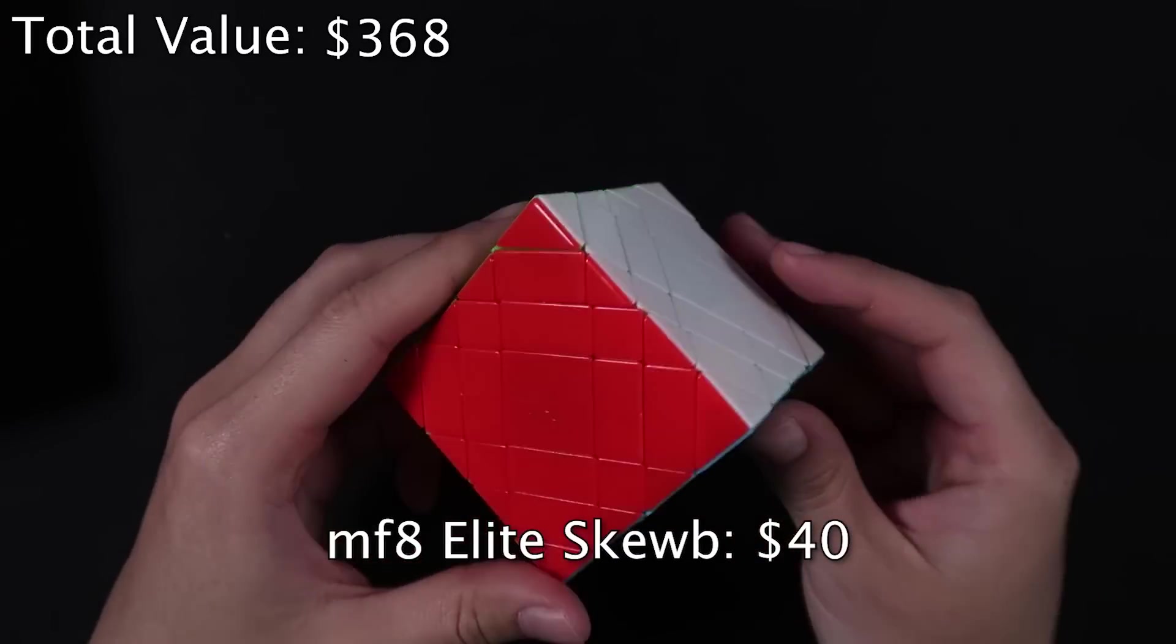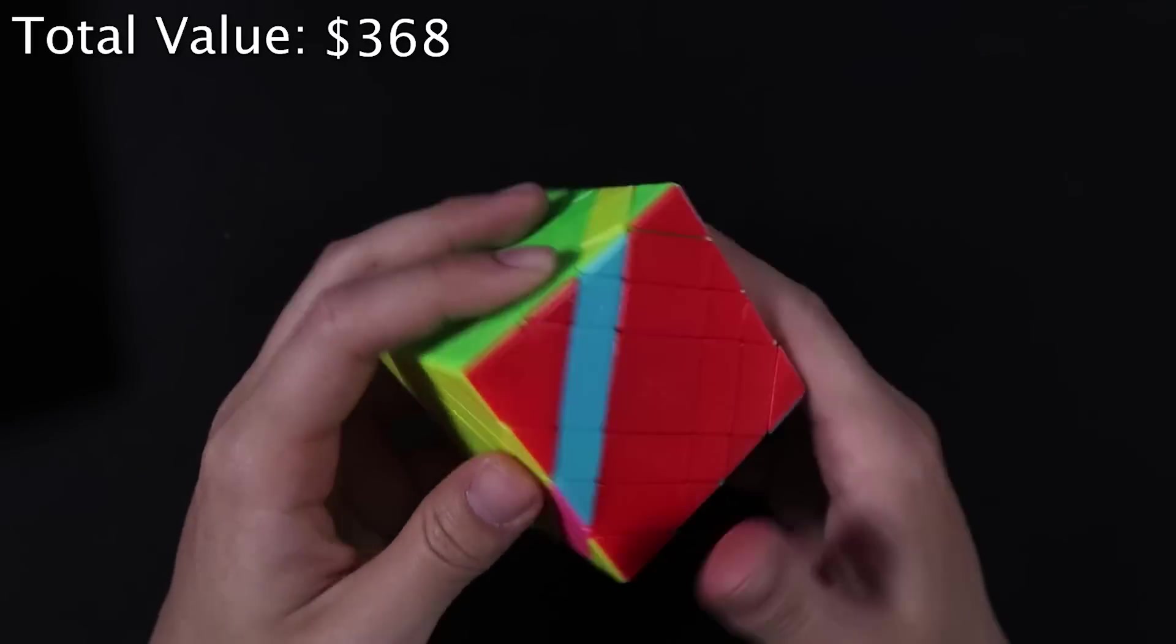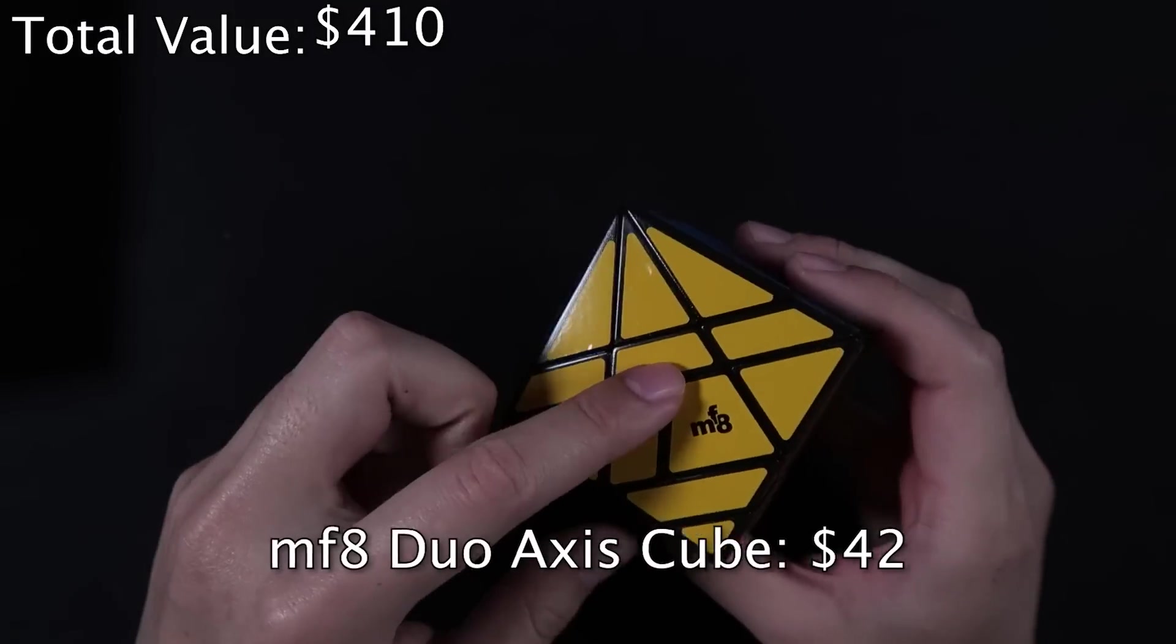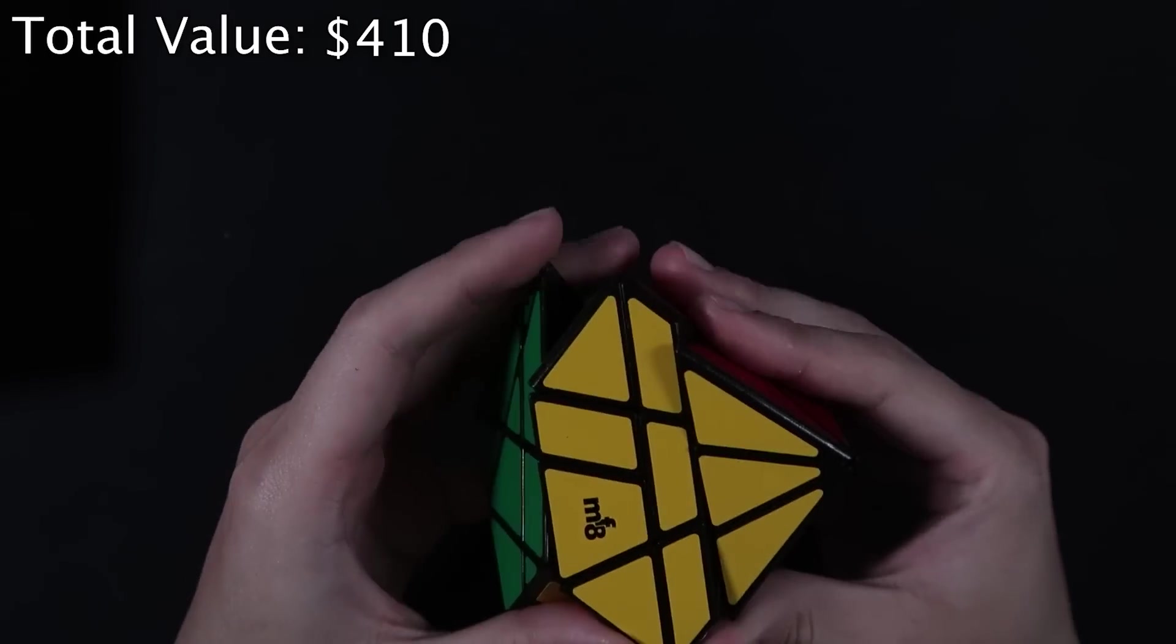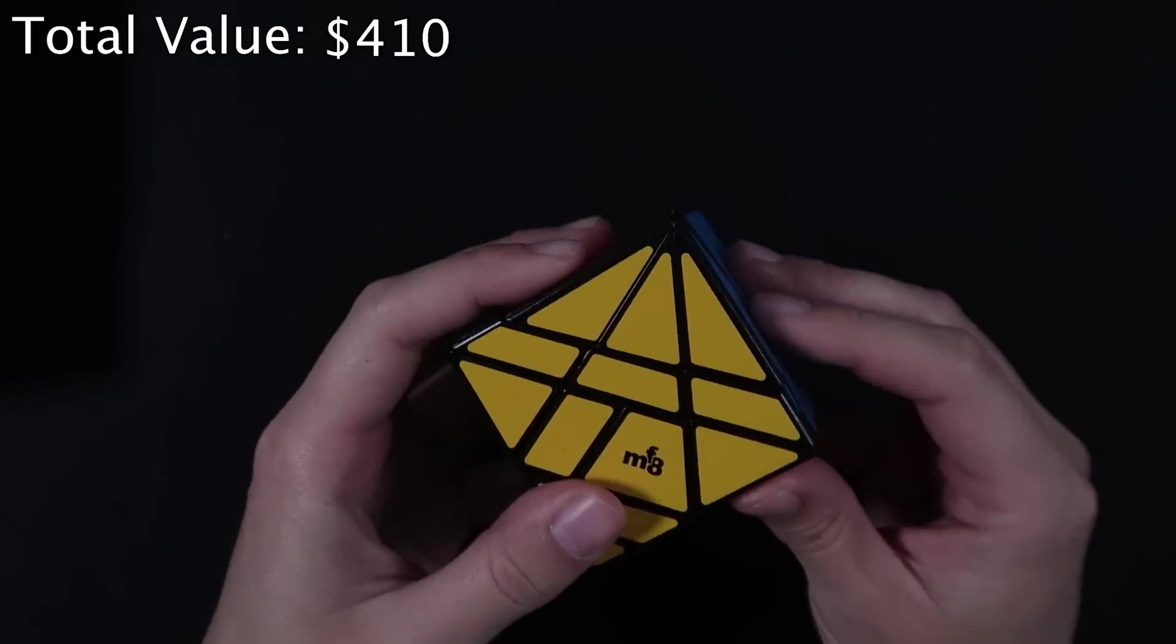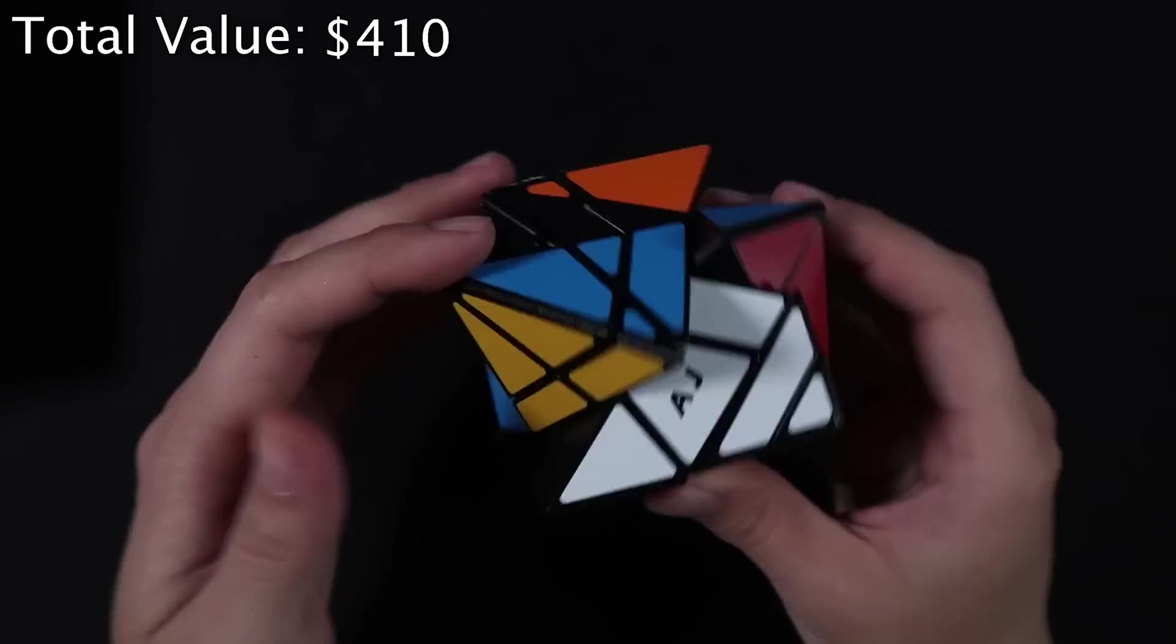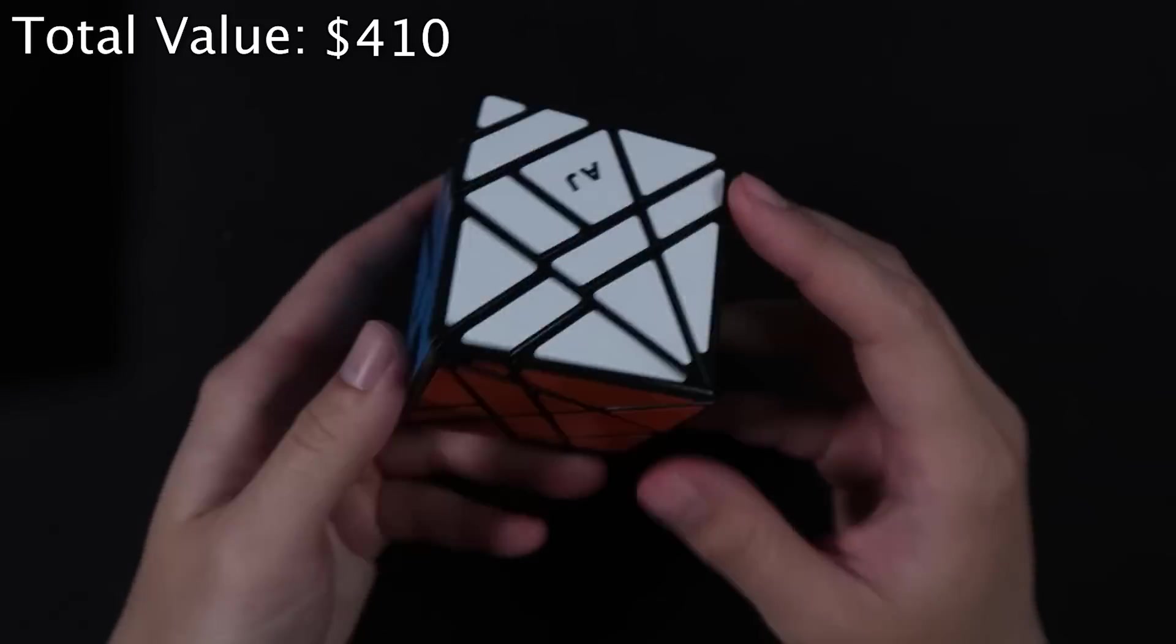Next, we have an MF8 Elite Scube. This puzzle is really cool. It turns really well. The colors are just super vibrant. I love how this looks. Next, I believe this is the MF8 Duo Axis Cube. It certainly looks like an Axis Cube, and I think it can also turn in this direction, so it's gotta be the Duo Axis. This cube is insane to me. I don't know that I would ever be able to solve this. This is two turns, and I'm already kind of lost. Crazy.